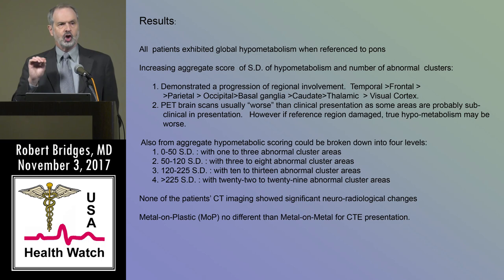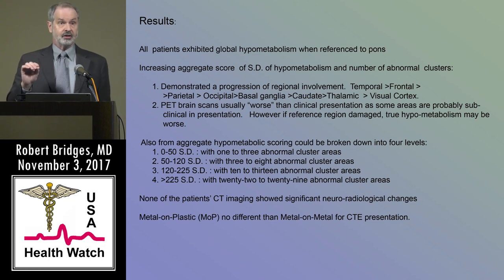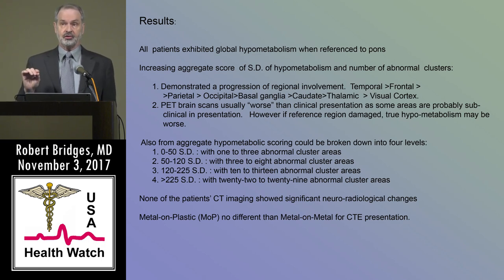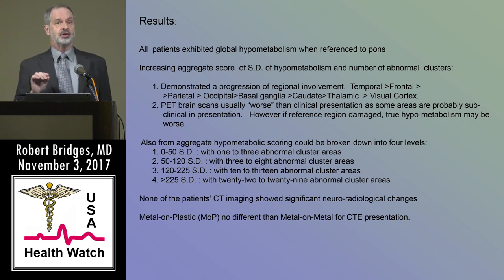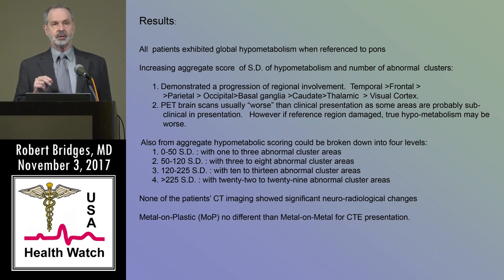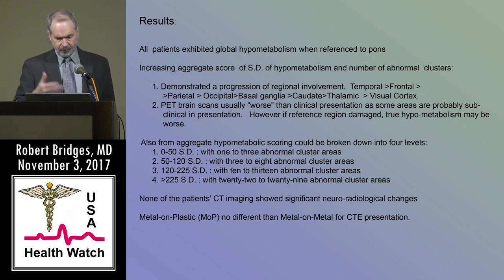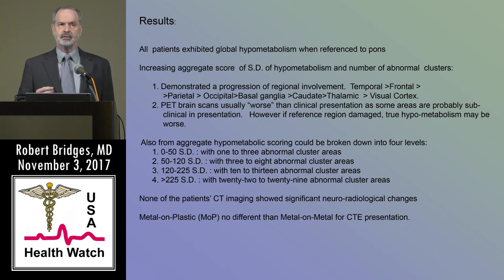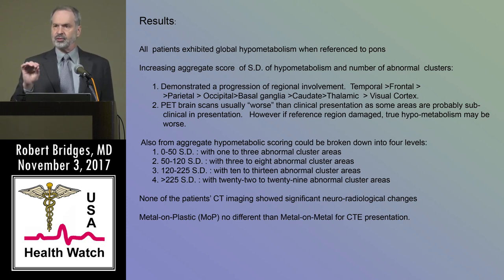Taking a look at all these patients together, we noted a descending order of involvement: temporal lobes followed by frontal, parietal, occipital, basal ganglia, caudate, thalamic, and visual cortex. These PET brain scans look worse than the patient at times because we're seeing subclinical disease — the beauty of PET is that we can see disease before it becomes evident. With Alzheimer's, PET imaging can detect the disease two years before it becomes clinically evident. Metal and plastic components showed no different toxicity than metal on metal.